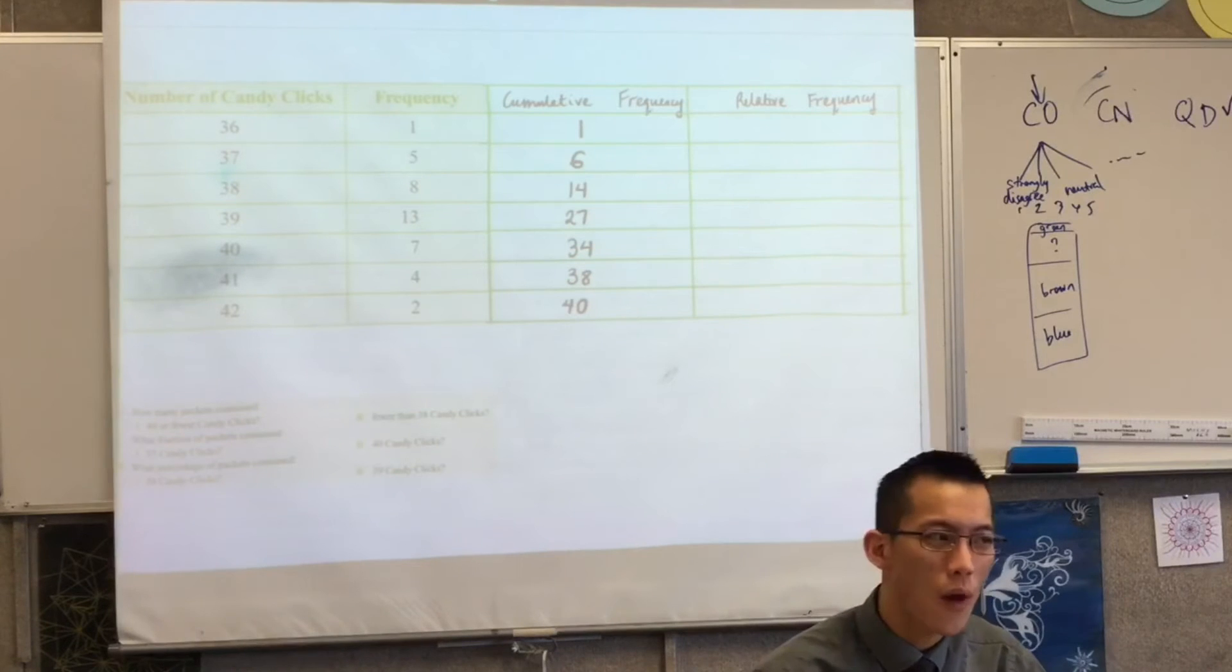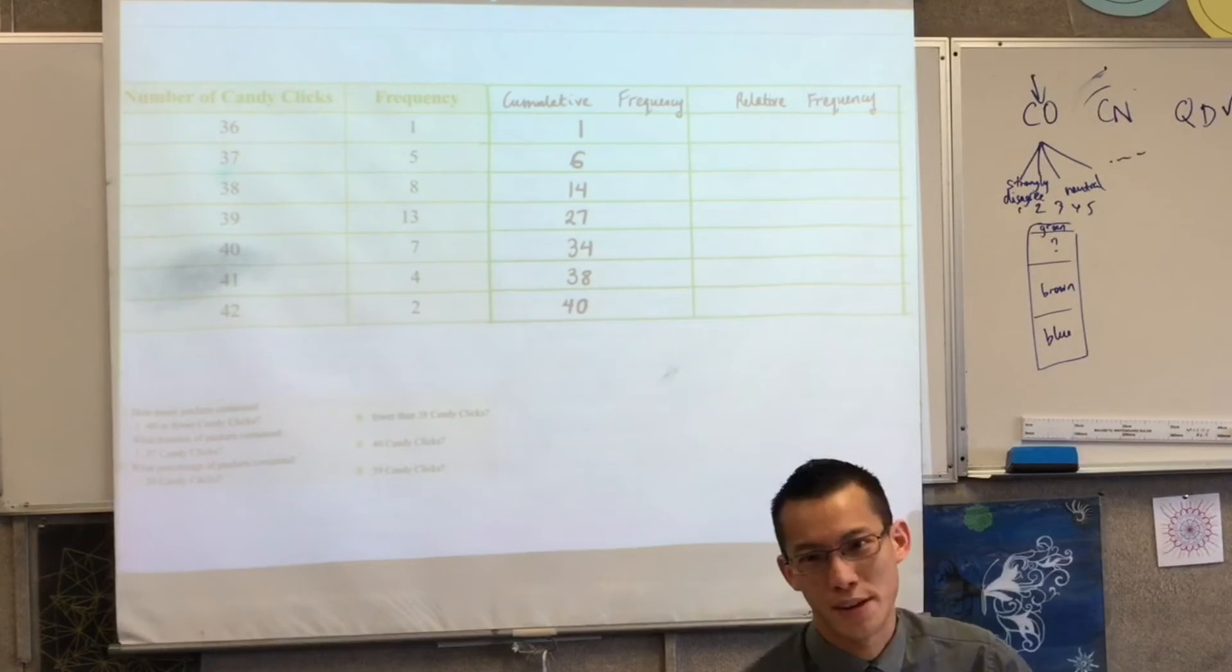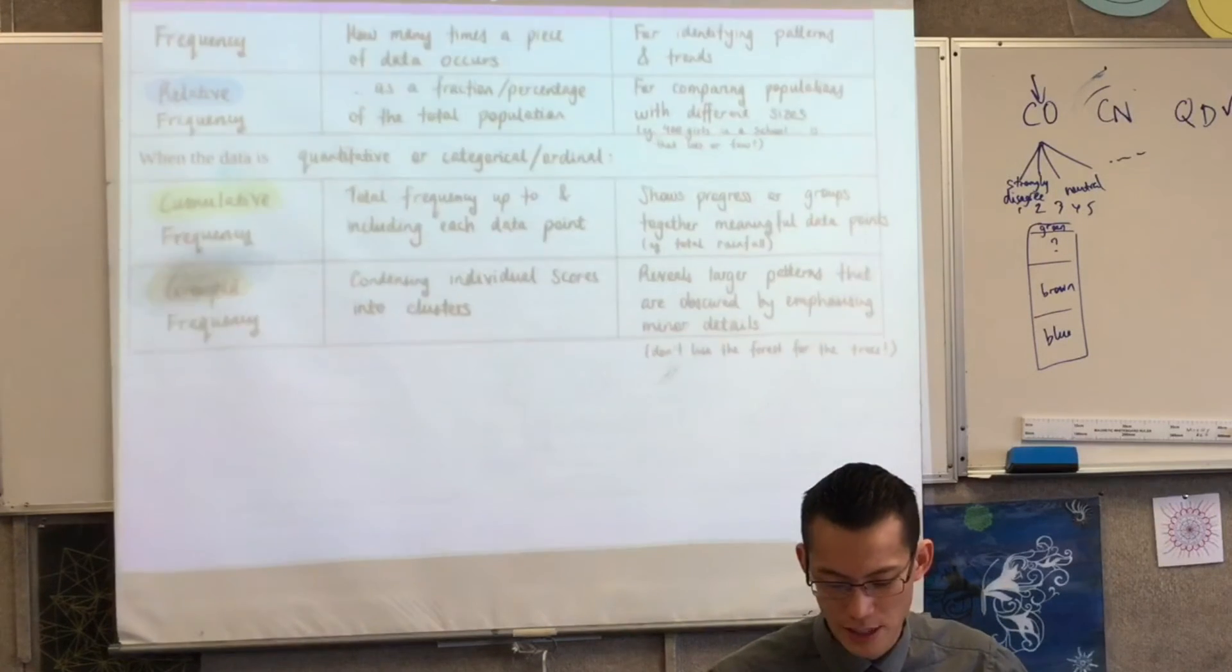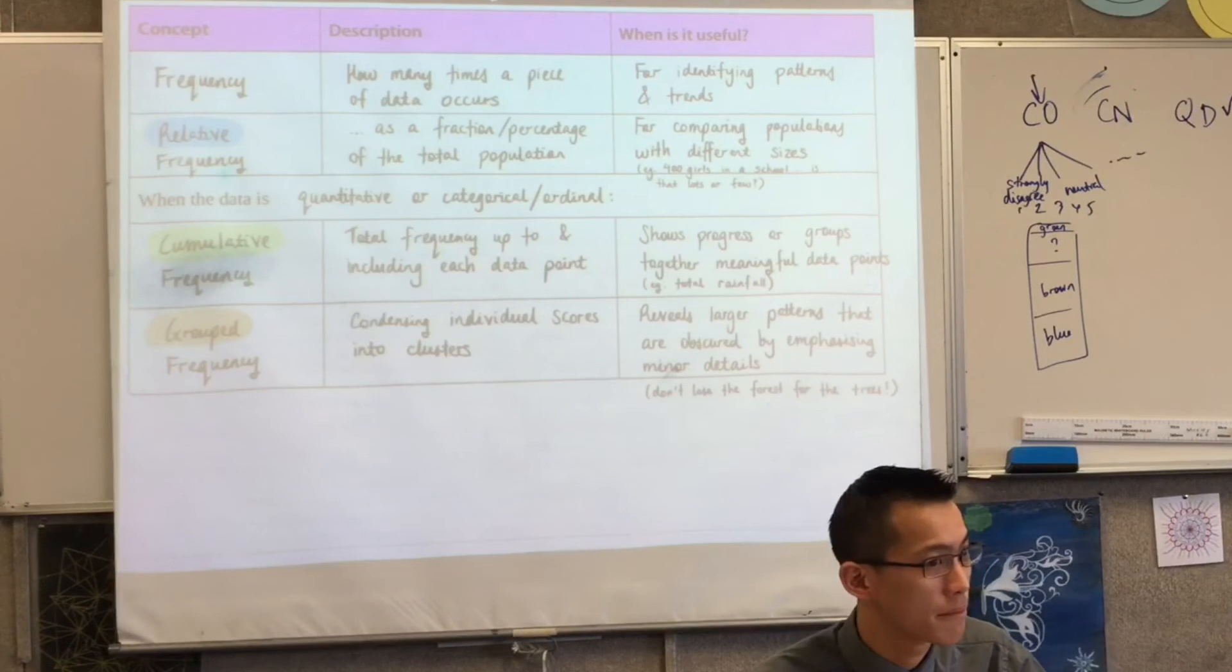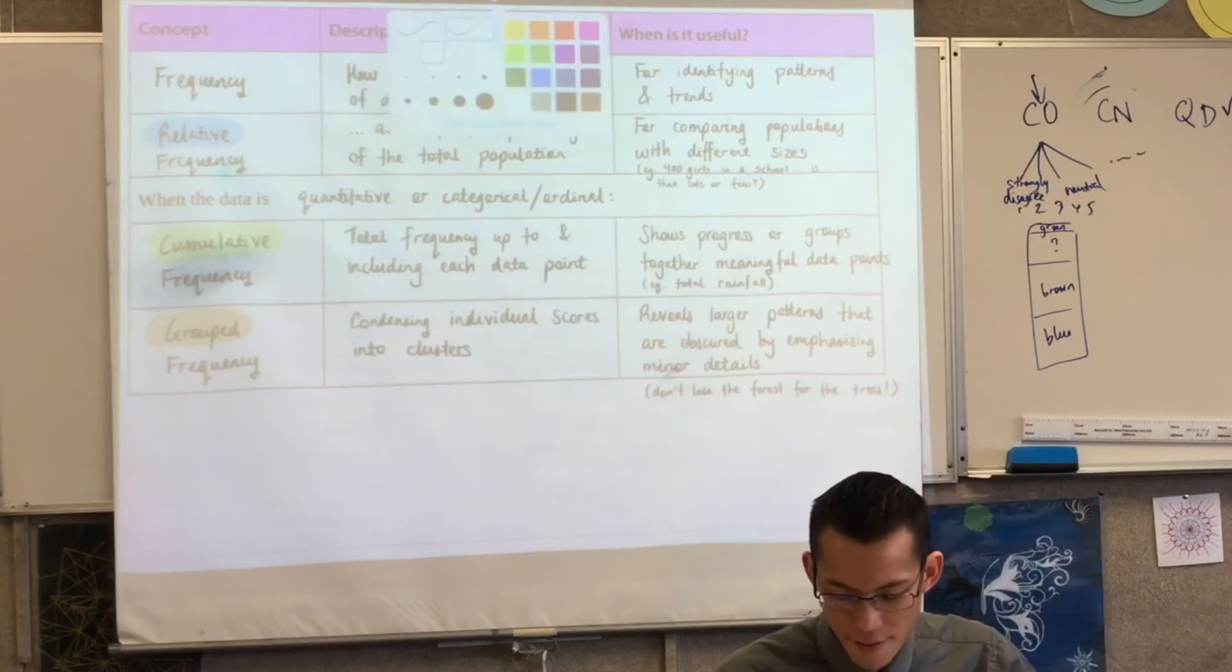Now can anyone tell me why it makes sense to work out cumulative frequency before relative frequency if you need to work out both? Maybe coming back to the definition for relative frequency might help. You need the thing over the column on the right? Yeah, very good.